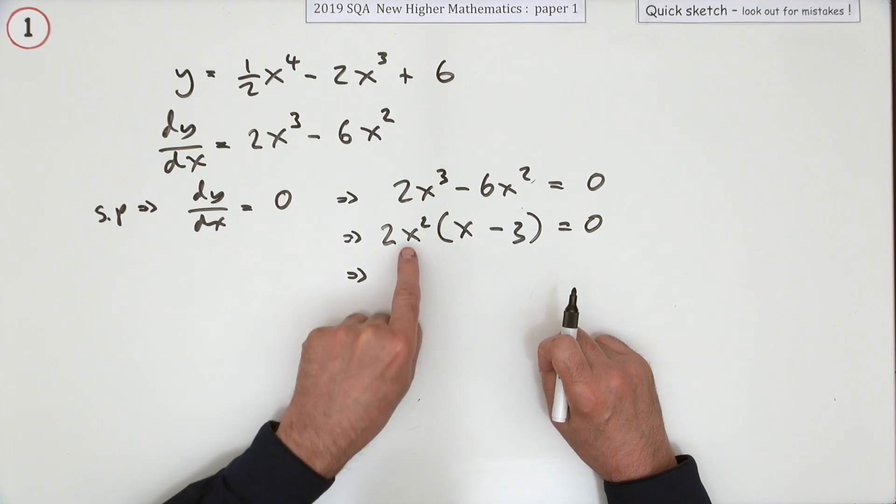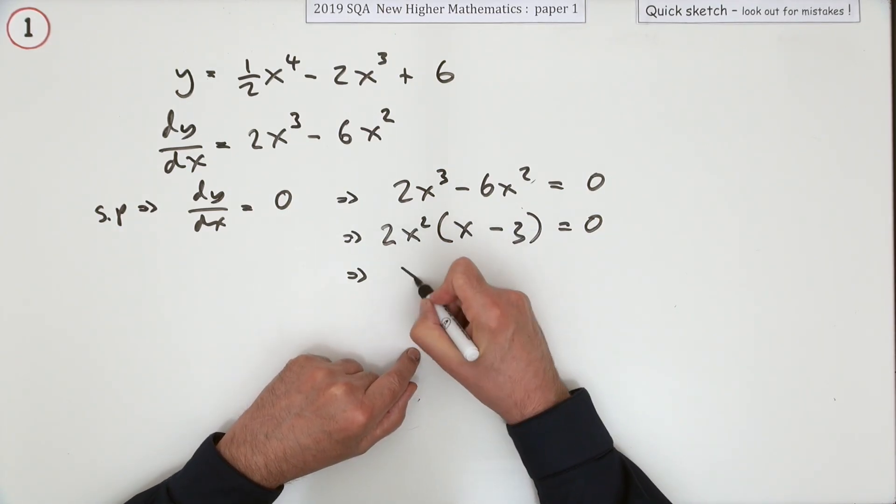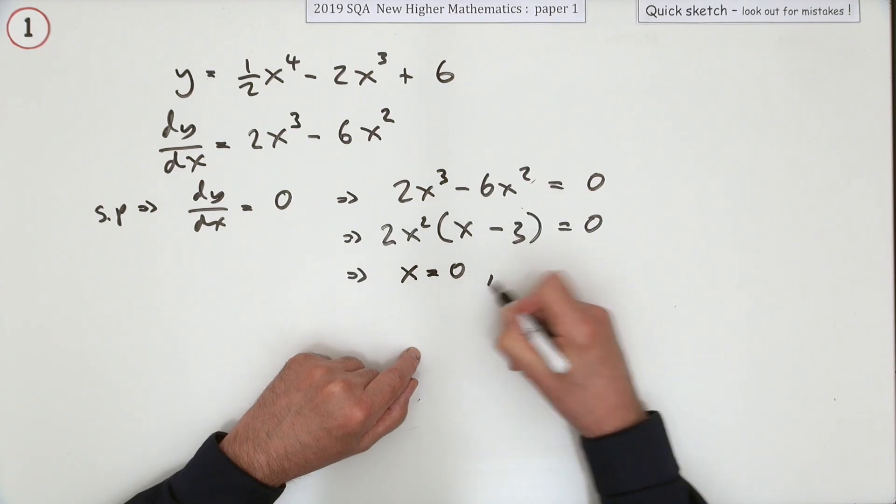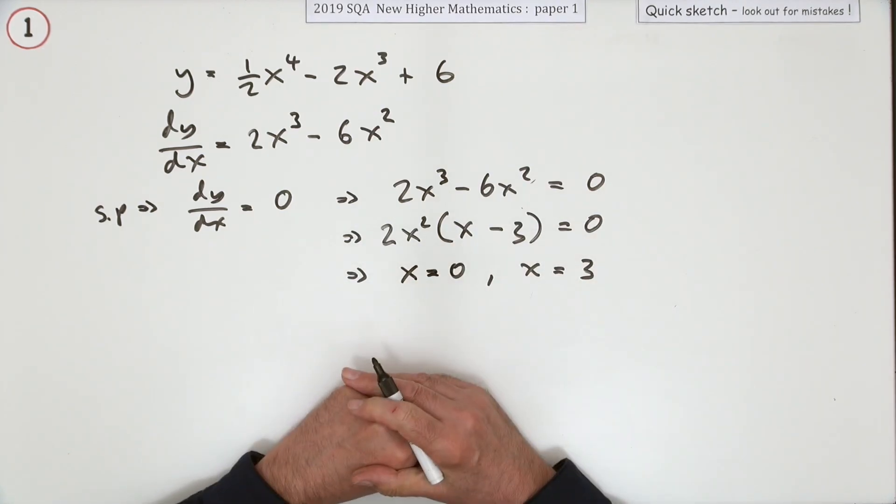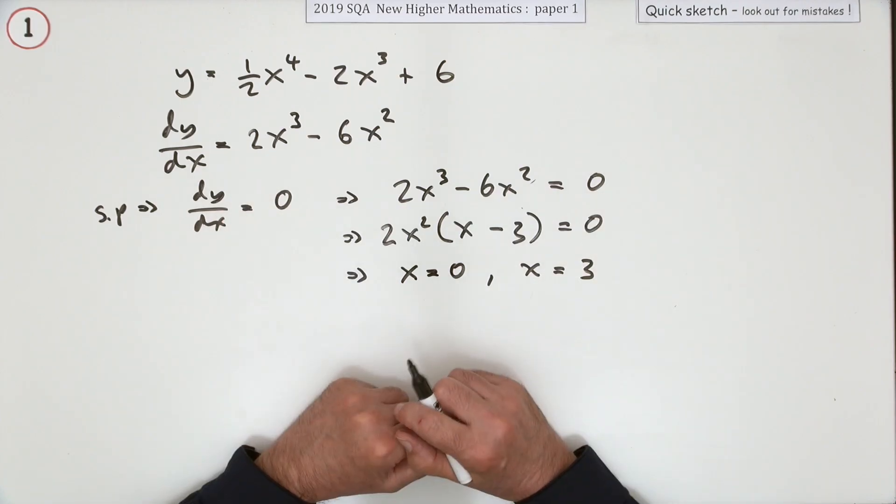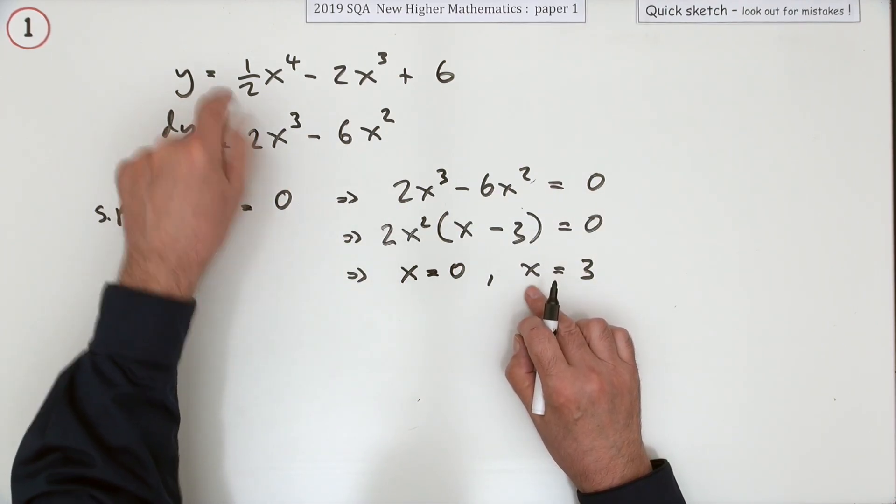Then one of them must be zero - it's the only way you get a zero. So either x² = 0, which means x = 0, or x - 3 = 0, which means x = 3. And that's all it asked for: find the x-coordinates of the stationary points on this graph.